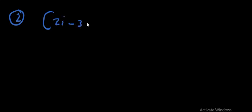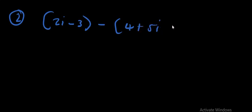The next example is: (2i − 3) minus (4 + 5i). What we are going to do is distribute the negative sign across the second bracket.